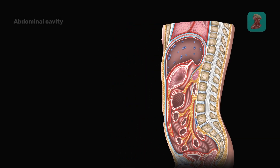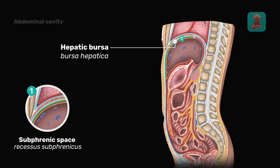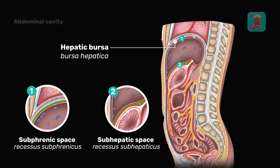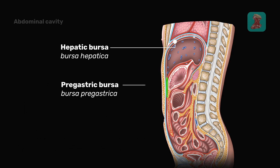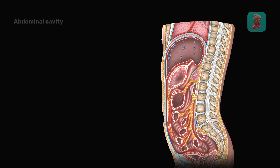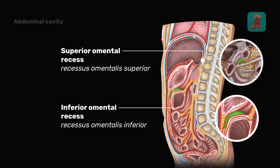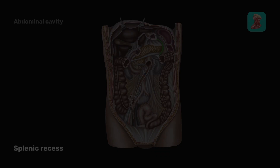There are three so-called bursae on the upper floor. The hepatic bursa, which contains the right lobe of the liver, has the subphrenic space and the subhepatic space. The pregastric bursa is located anteriorly to the stomach and the lesser omentum. The omental bursa is located posteriorly to the stomach and the lesser omentum, and contains three recesses: the superior omental recess, the inferior omental recess, and the splenic recess.